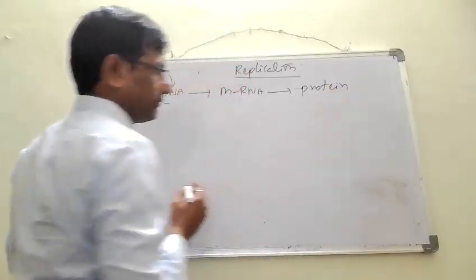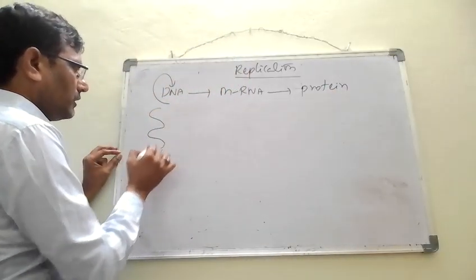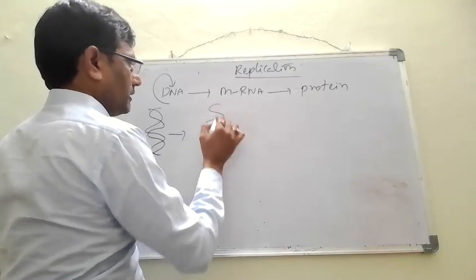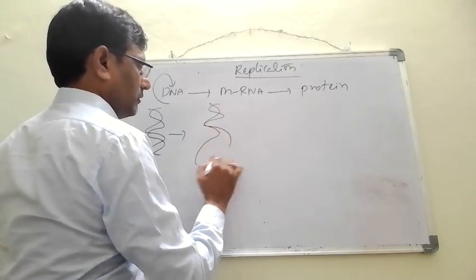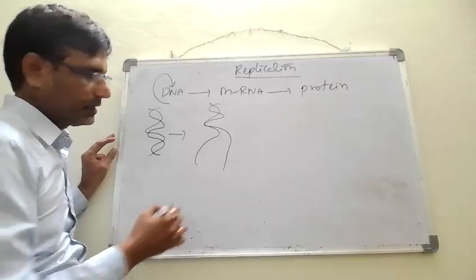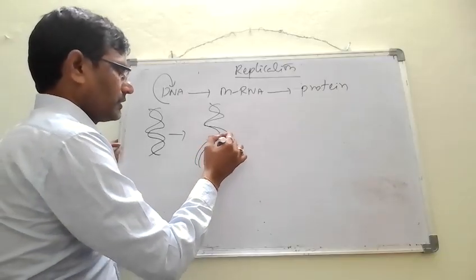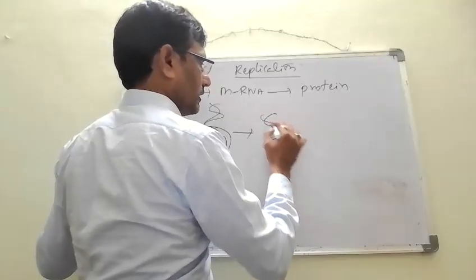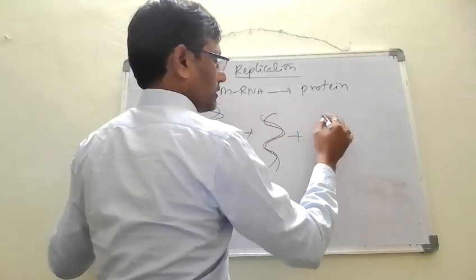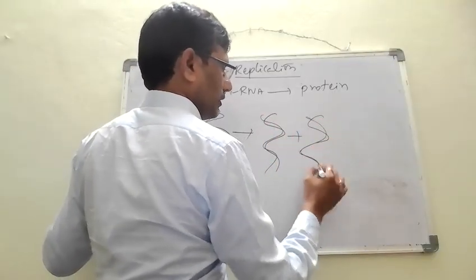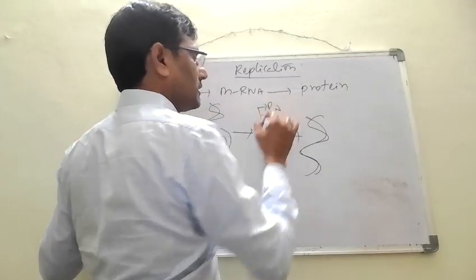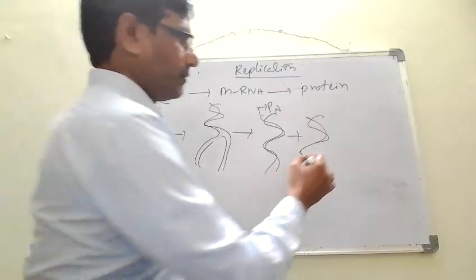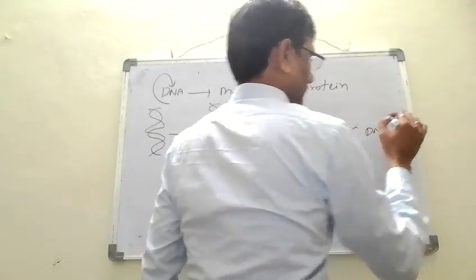During DNA replication, two strands of DNA get separated and these two strands work as templates. On these two templates, new DNA strands get synthesized, as a result of which we get two daughter DNA molecules. In these two daughter DNA molecules, one strand is parental type and another strand is the newly synthesized daughter strand. This kind of DNA replication is called semi-conservative DNA replication.